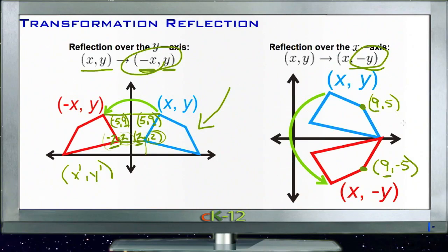So to reflect over the x-axis, keep the x-coordinate the same. To reflect over the y-axis, keep the y-coordinate the same. That's how I remember it—I don't change the coordinate that goes with the axis I'm reflecting over. All right, let's take a look at the examples.